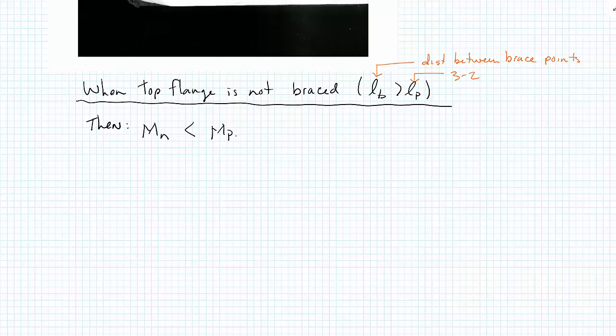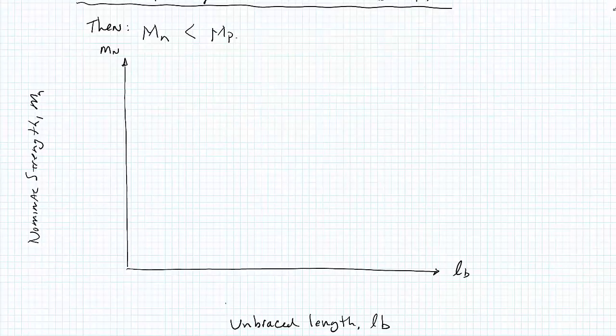Let me show you what that relationship looks like, and then the next time we come back to this topic, we'll be able to use the design aids in the AISC tables. Graphically, here's what it means. It means that if our unbraced length is zero, we can develop the full moment capacity, the full plastic moment capacity, MP.